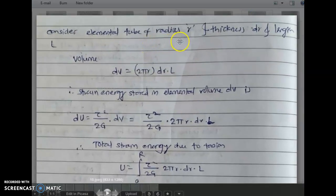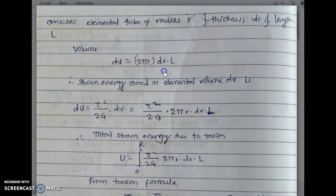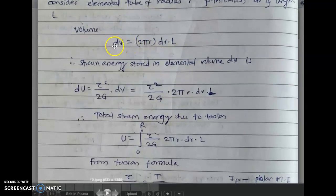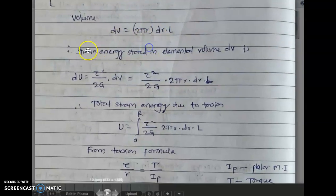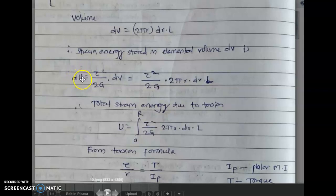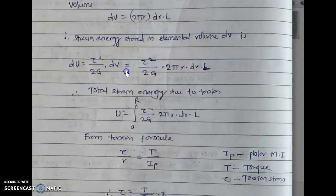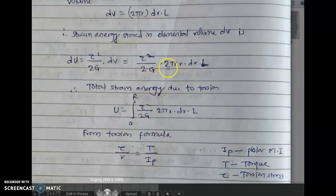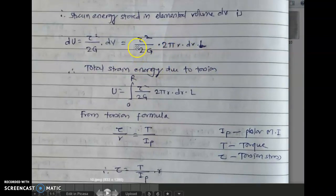Consider an elemental tube of radius r, thickness dr, and length L. The volume of this elemental tube is dV equals 2·pi·r·dr·L. The strain energy stored in the elemental volume dV is dU equals tau squared upon 2G into dV, which equals tau squared upon 2G into 2·pi·r·dr·L. After integrating we get the total strain energy due to torque.